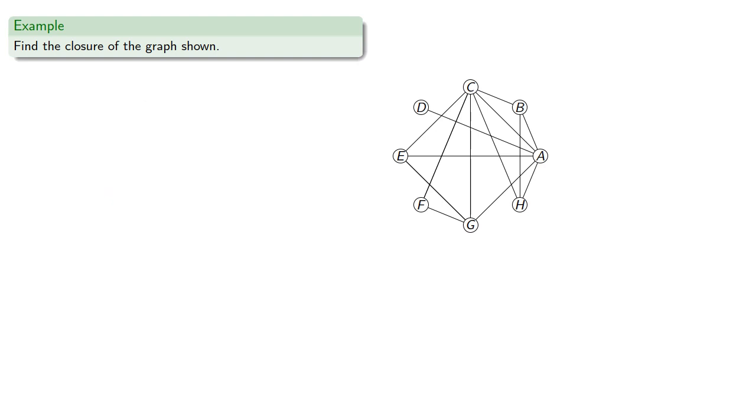What's important to recognize here is that the degree of A has increased, so now A has degree 6, and so the degree of A plus the degree of F is at least as great as the number of vertices, and so now we should join AF.